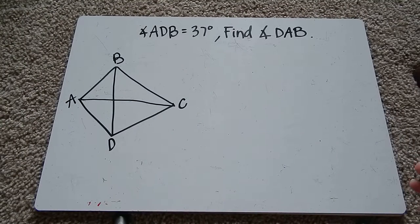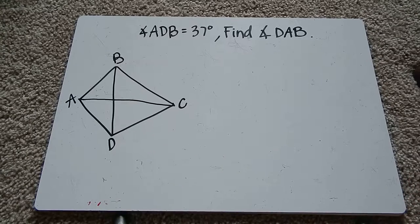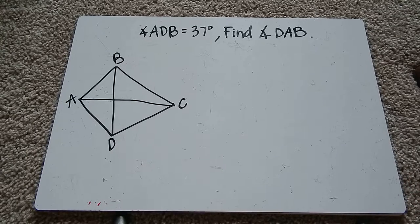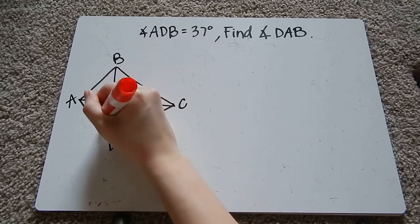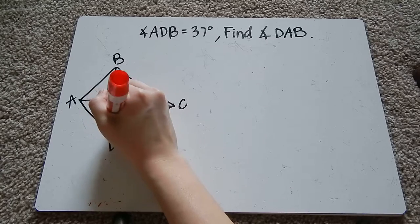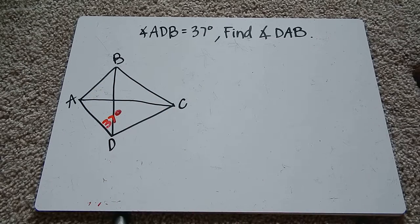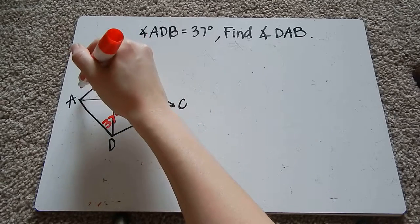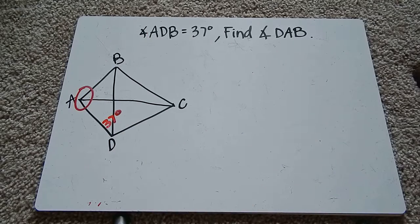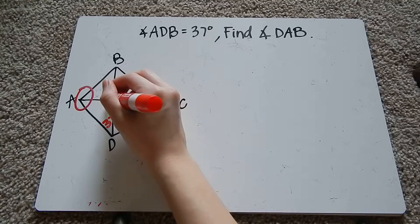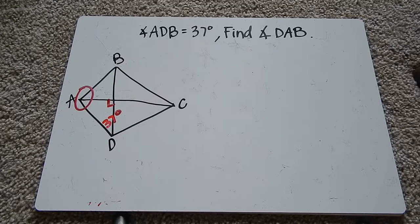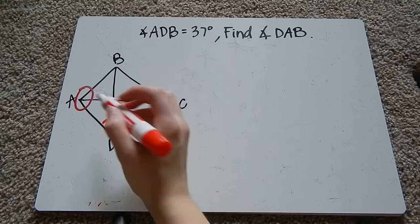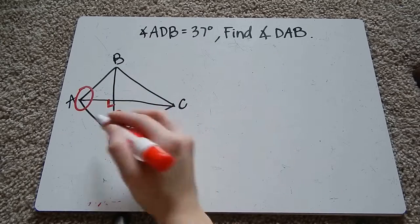Okay, our next and last problem is about angles. So it tells us angle ADB, ADB is 37. I want to know DAB, I want to know this whole angle here. So remember I also know that these are right angles when the diagonals intersect, they make right angles.